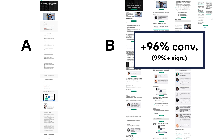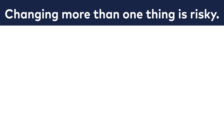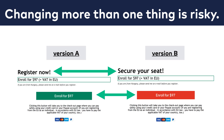I have to admit something, though: changing more than one thing is risky. Why? Because whether your conversion rate goes up, down, or stays the same, you won't know the contribution of the individual elements in that change. Maybe your new images increased the number of registrations but the new wording decreased it, or maybe it's the other way around — but you won't know that, because you will only see the total effect.